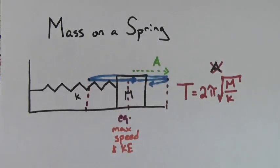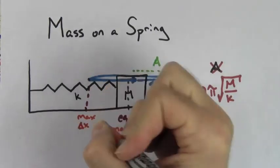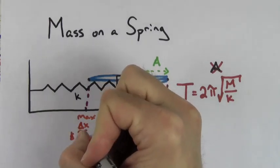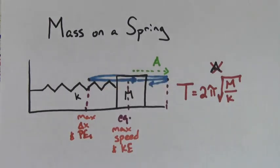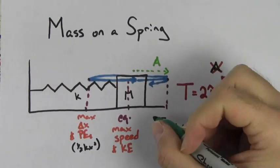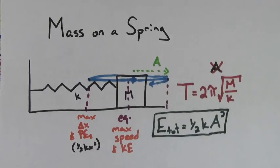The endpoints are where the displacement is largest. It's also where the force, acceleration, and spring potential energy are largest. The total energy in a mass-spring system is one-half k times the amplitude squared.